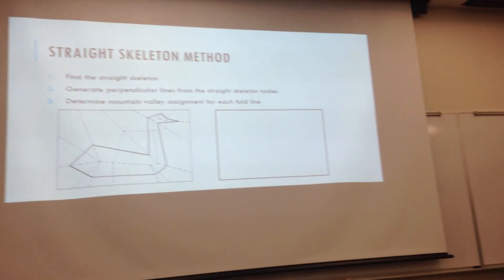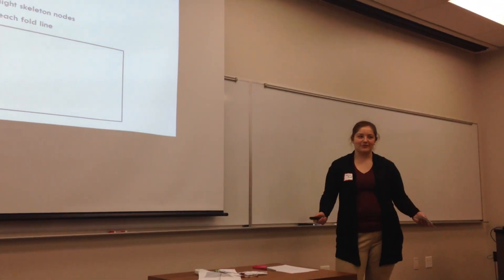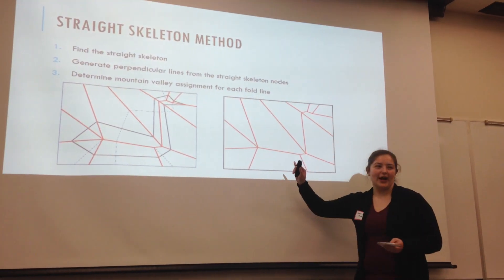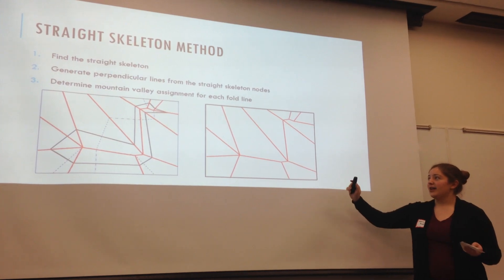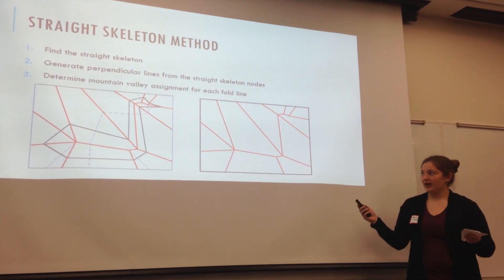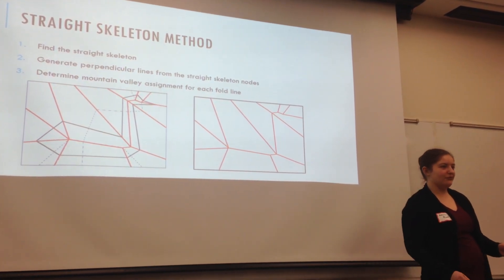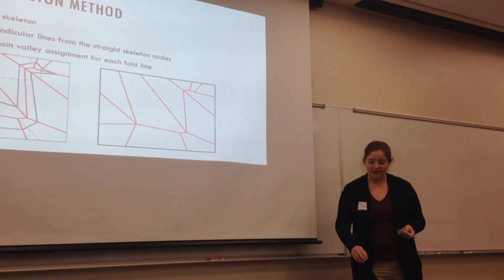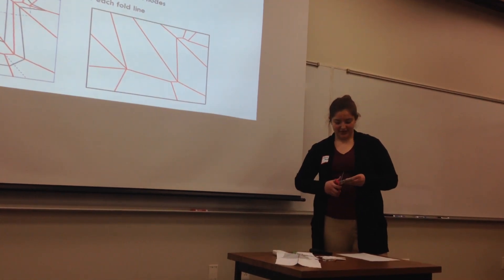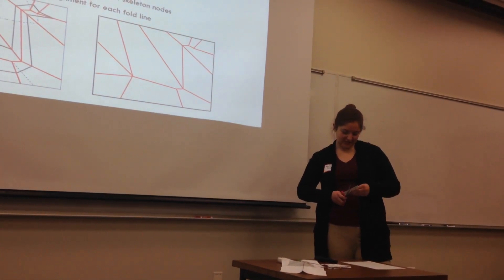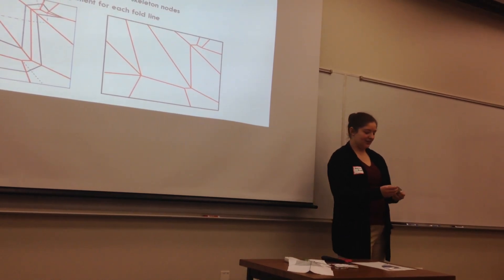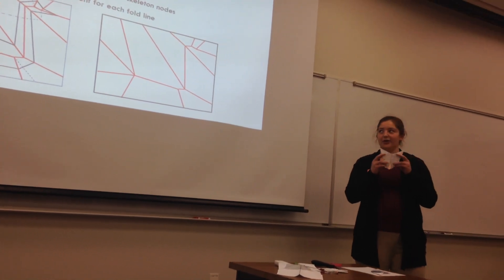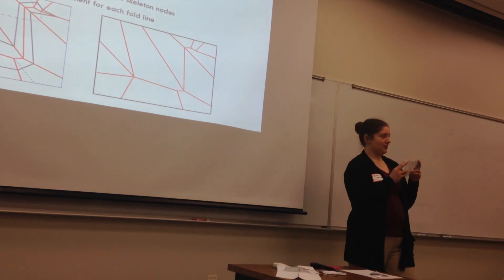The straight skeleton method has three parts. First, we find the straight skeleton. Then those lines become some of the lines we fold along. The fold-and-cut problem is based on the idea that you can take any shape, create a series of folds, and then make one straight-line cut. So I have a little example here — this should be a butterfly — demonstrating a series of folds that creates a shape with one single cut.